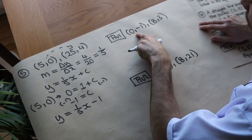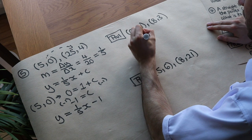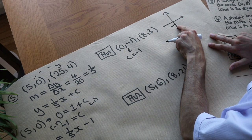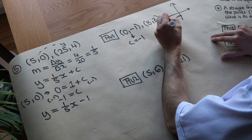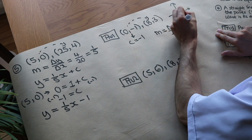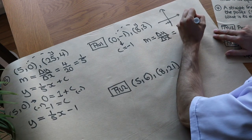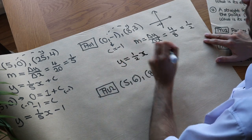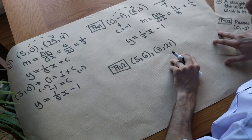Let's do the first one. Because the x value is 0, this point lies on the y-axis, so the y-intercept is minus 1, i.e. c equals minus 1. For the gradient: change in y over change in x — from minus 1 to 3 is adding 4, and the change in x from 0 to 8 is 8. So m equals 4 over 8, which simplifies to a half. Therefore y equals half x minus 1.